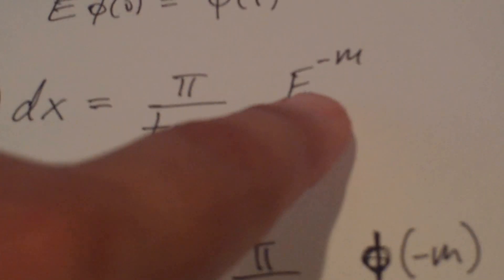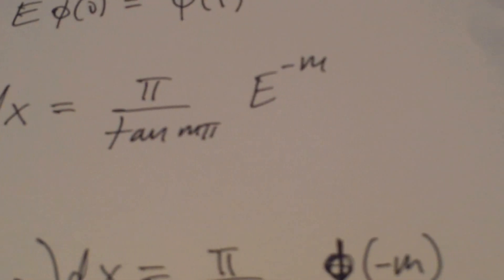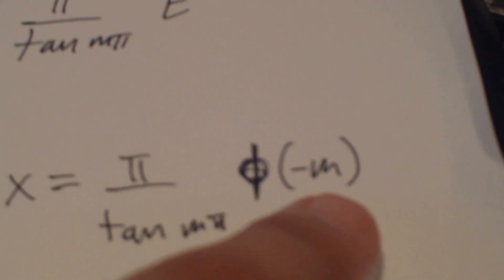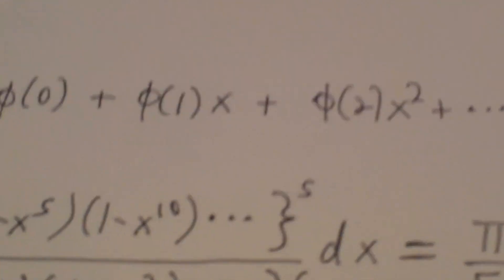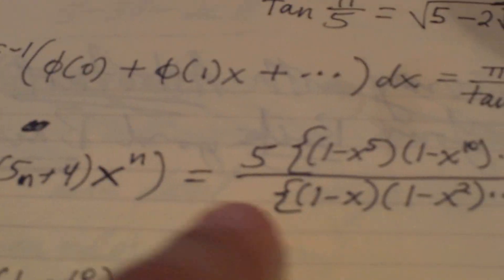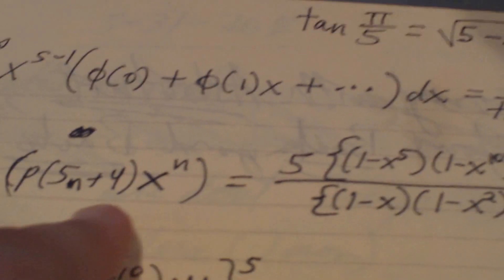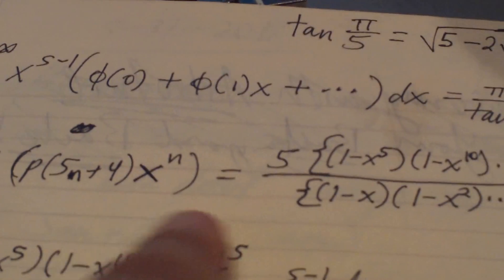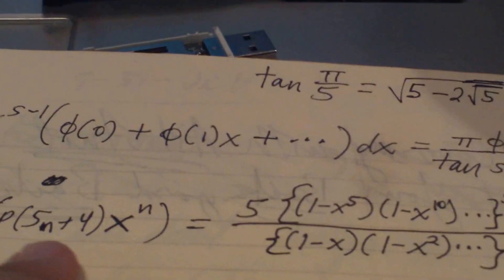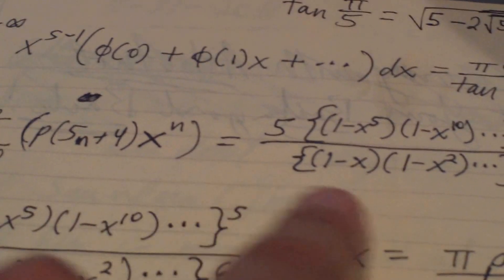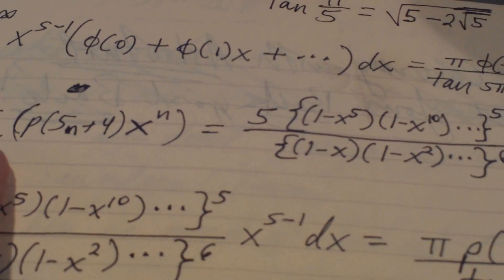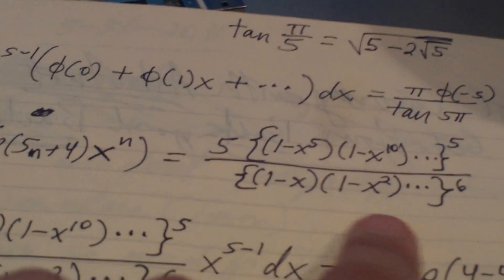Then phi sub zero times e to the minus m moves it backward to phi of minus m. So now we use one of Ramanujan's most beautiful identities — Littlewood picked this out and Hardy agreed that this is probably the most amazing identity Ramanujan ever came up with, if you could just pick one. They both agreed on this.